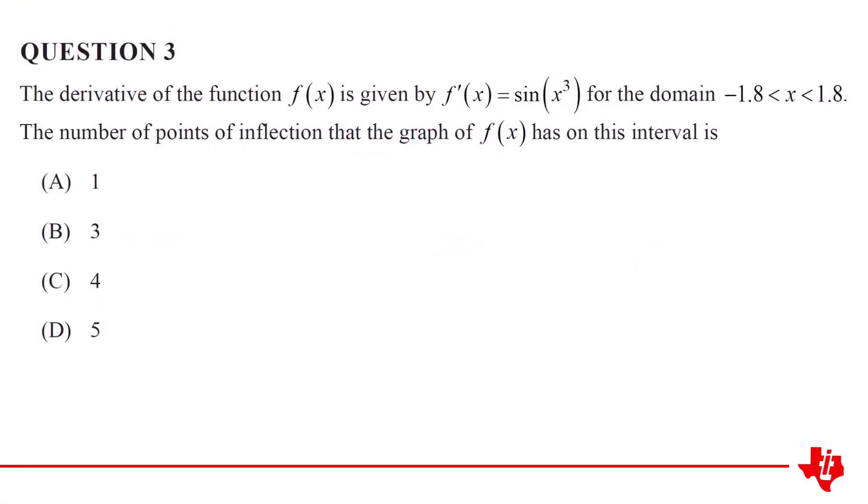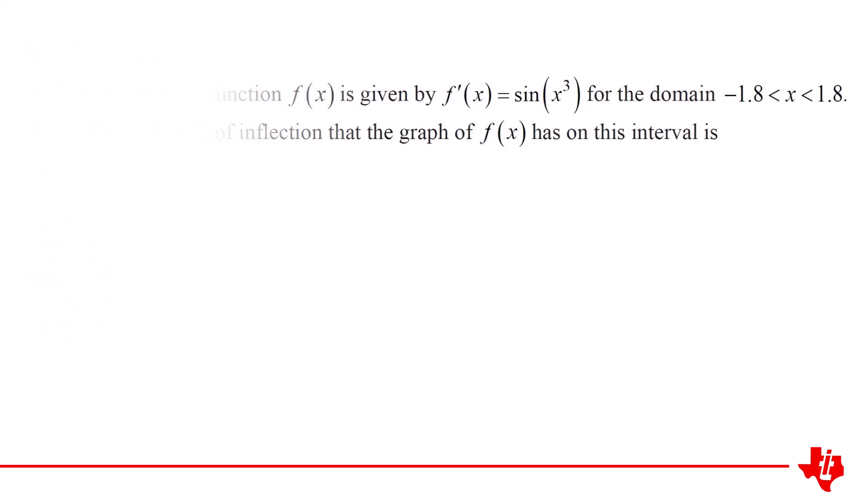So we can lock in four points of inflection on our original graph over the specified domain. Reviewing what we've managed to achieve, we've determined the number of points of inflection for a function that we've never actually seen. And that's a wrap for this session. Check out our other videos, or send us a request if there are other concepts you'd like covered. Thanks for watching.